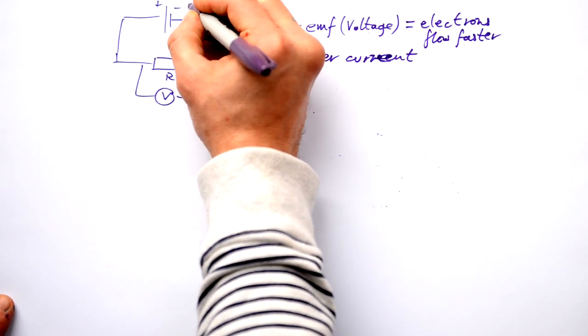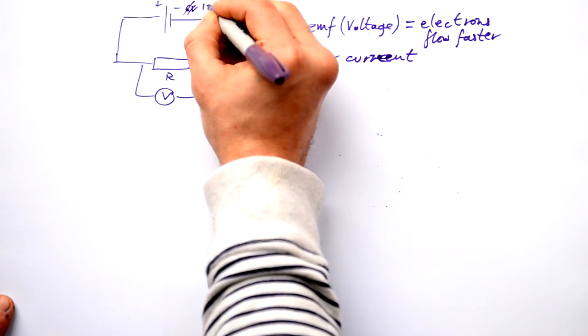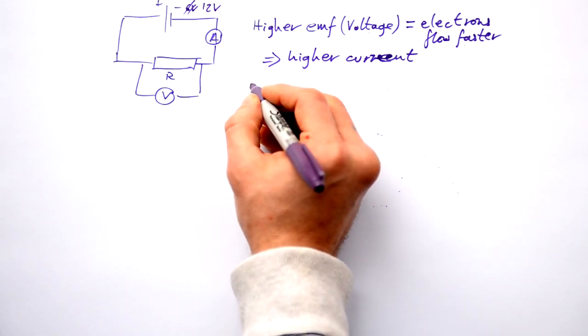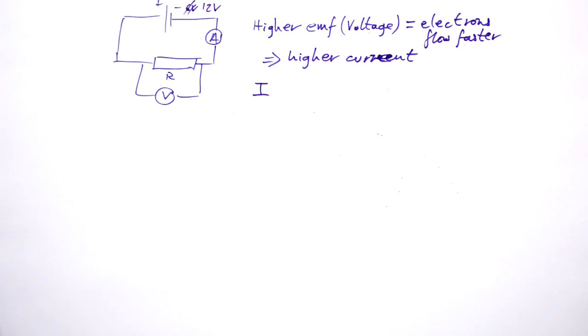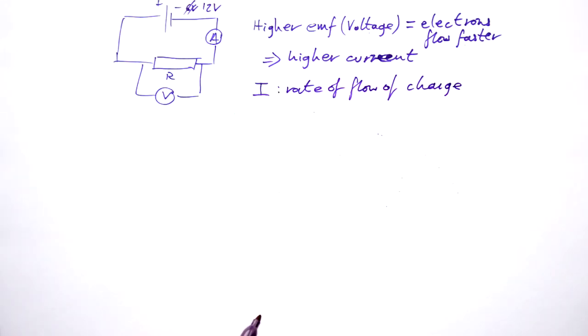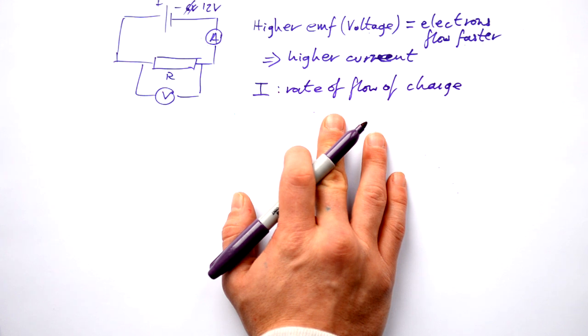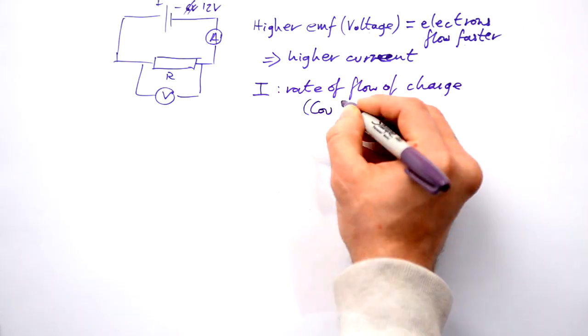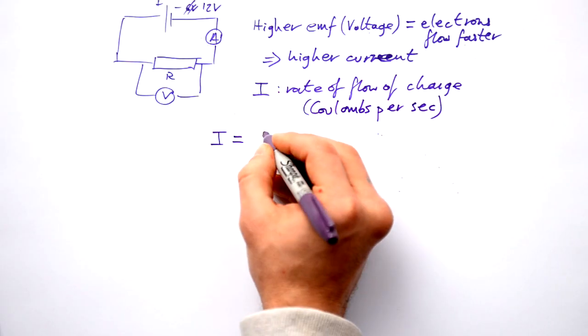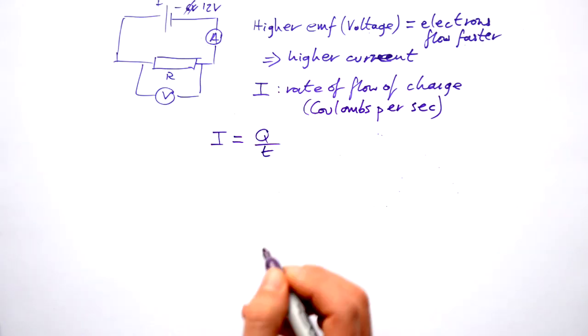If you replace this battery with a 12 volt battery, you would expect the electrons to flow twice as fast. And that is what we see, or we should see anyway. Current, we give the letter I, we don't give it the letter C because that's reserved for capacitance. So current is the rate of flow of charge. In other words, how fast the electrons are flowing. We're not saying how many electrons pass through the circuit every second. We talk about how many coulombs, so we say coulombs per second. So that means that current is equal to charge divided by time.